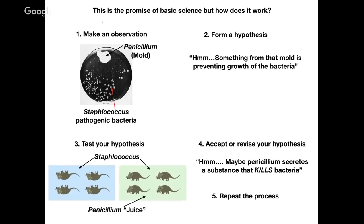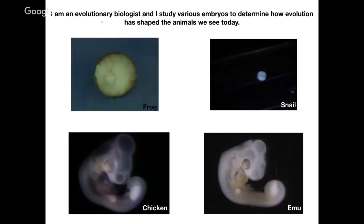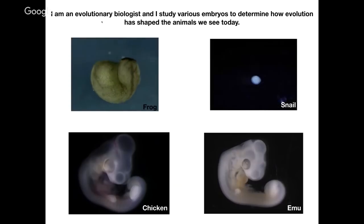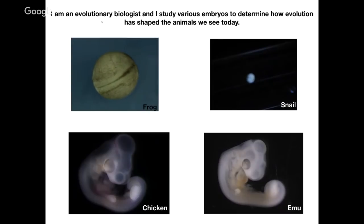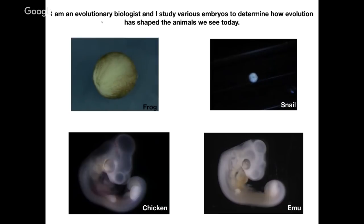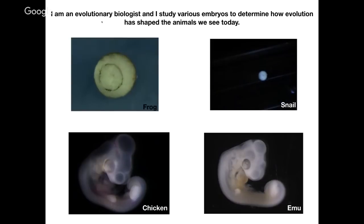Finally, once you finish all of this, you repeat it, make sure it's real, and then publish it in a peer-reviewed journal where other scientists look at your results and see if you've done your experiments in a logical way and that your conclusion is correct. As Dr. Squire said, I'm an evolutionary biologist and I study various embryos to determine how evolution has shaped all of the animals we see today. I'm curious about animal diversity and how we generate that diversity. I study embryos because all animals start from a single cell with a single genome, and somehow that cell divides, those cells move around, and they turn into different shapes and tissues — producing birds or frogs or snails that all have different morphologies.